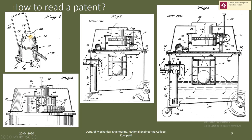There may be more than one image in a patent, representing various functional or design features. Figure two, for instance, is a cut sectional image of the top portion of the vacuum cleaner, showing what is inside. Figure three is defined as suction mode, and there is also a dump mode figure, with elements indicating the flow of air and dust during each operation. These are sectional views during operation.